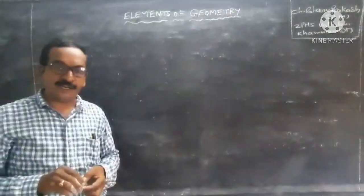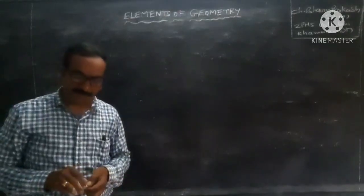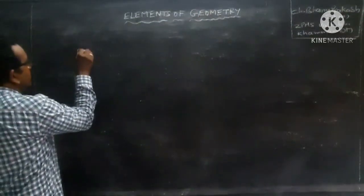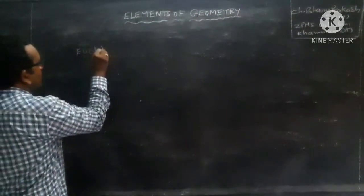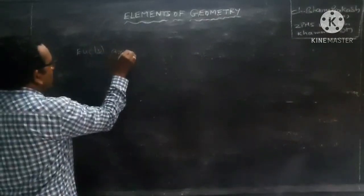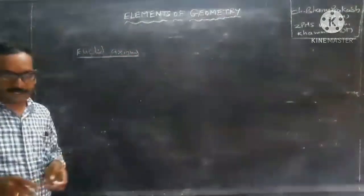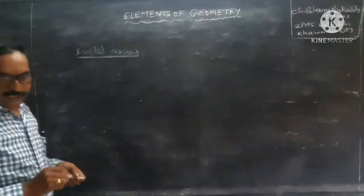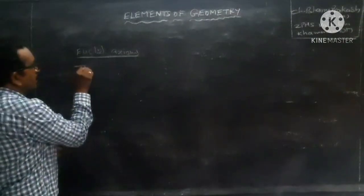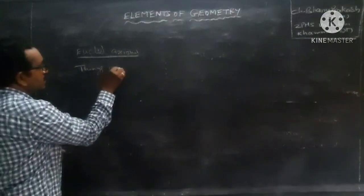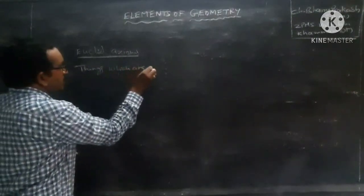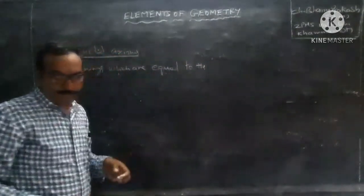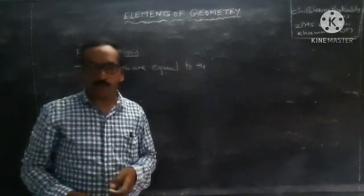The axioms arise in different situations. Now we will discuss Euclid's axioms. First: things which are equal to the same things are equal to one another.